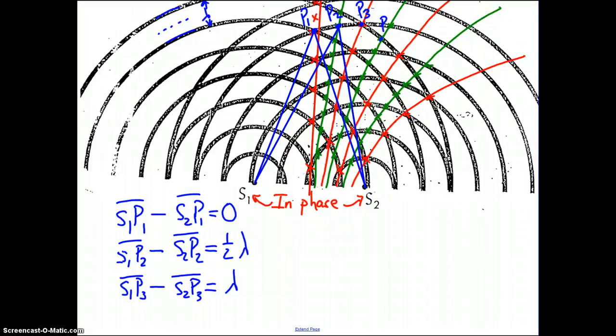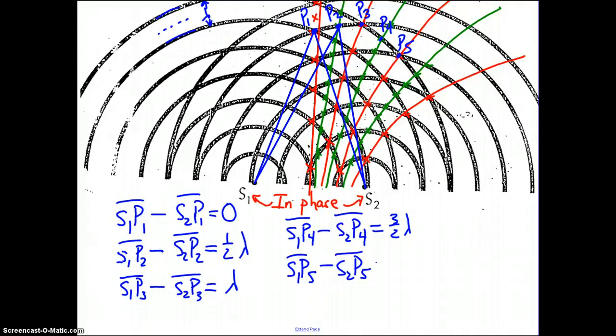For P4, line segment S1 P4 minus line segment S2 P4 turns out to be one and a half or three halves wavelength. For P5, which lies on the next line of reinforcement, S1 P5 minus S2 P5 turns out to be two whole wavelengths.